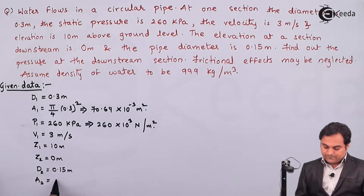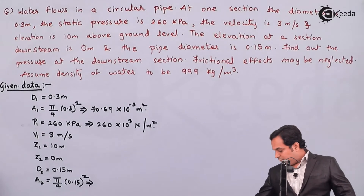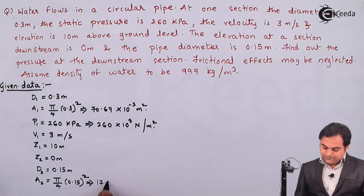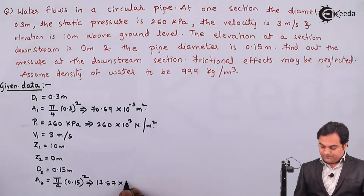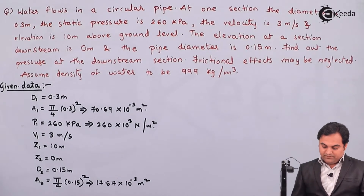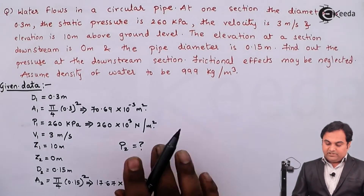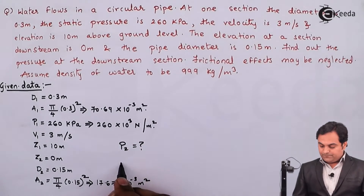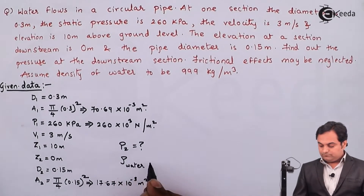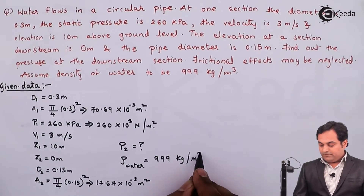From the diameter at section 2, I'll calculate area 2, which comes out to be 17.67 × 10⁻³ meter square. We need to find the pressure at the downstream section 2. Frictional effects may be neglected, and the density of water is 999 kg per meter cube.